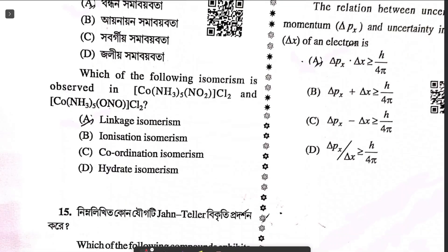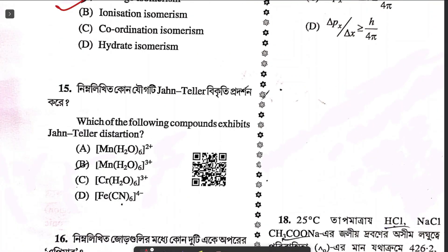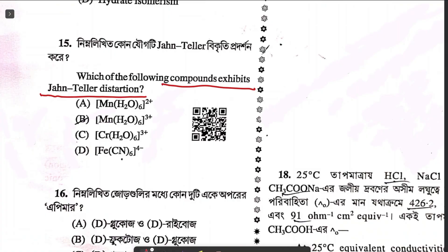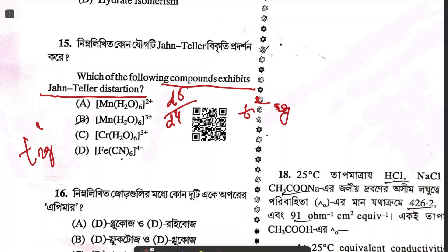Question fourteen asks which isomerism is observed between two given compounds — the correct answer is linkage isomerism. Question fifteen asks which compound exhibits Jahn-Teller distortion. Jahn-Teller distortion is given by compounds with asymmetrically filled eg orbitals. [Mn(H2O)6]²⁺ is a d5 system — both T2g and eg are symmetrically filled. [Mn(H2O)6]³⁺ is a d4 system with T2g³ and eg¹. The possible answer is option B.